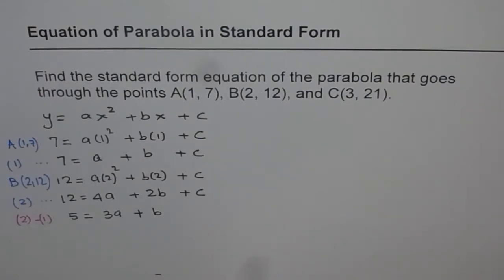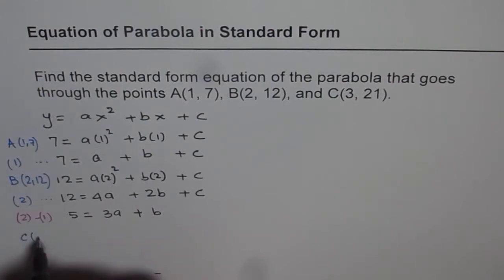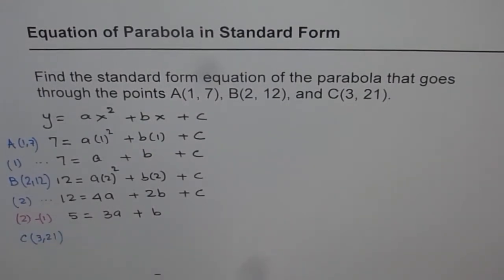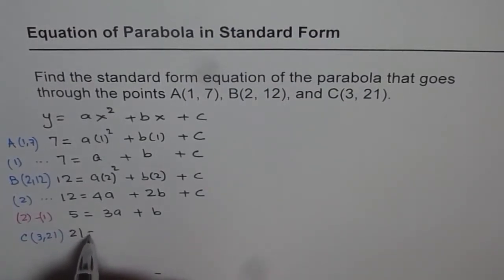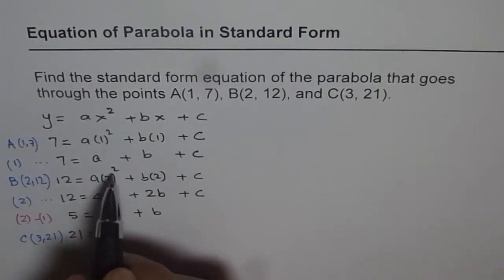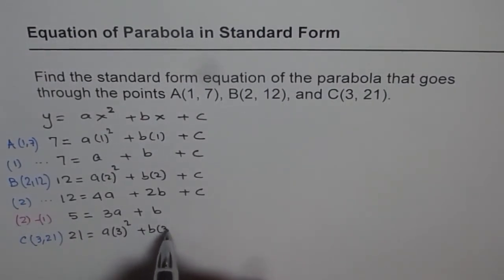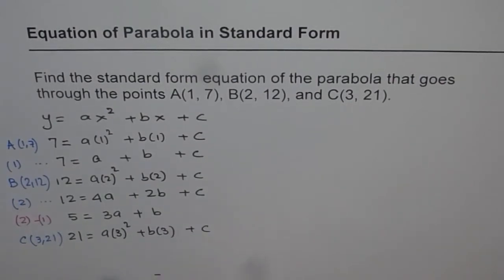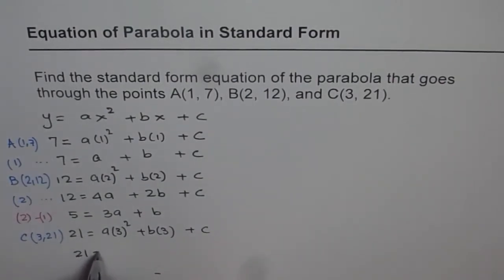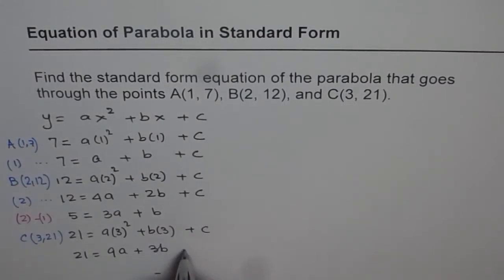Now we can also get the third equation which is using the point C(3, 21). So 21 is the y value. 21 equals 3 square is 9. So we get 21 equals 9a plus 3b plus c. Let this be our equation number 3.